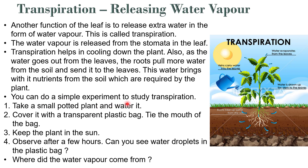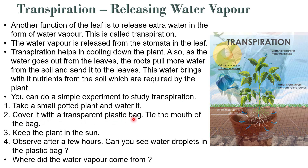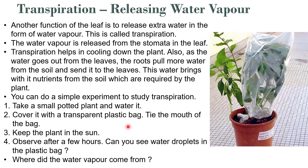You can do a simple experiment to study transpiration: take a small potted plant and water it, then cover it with a transparent plastic bag and tie the mouth of the bag. Keep the plant in the sun and observe after a few hours. You can see water droplets in the plastic bag — this water vapour came from the leaves of the plant through transpiration.